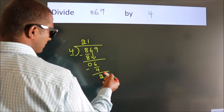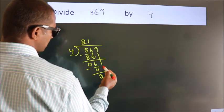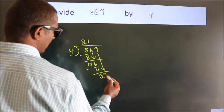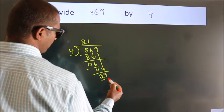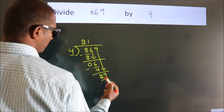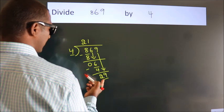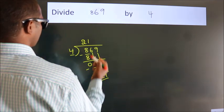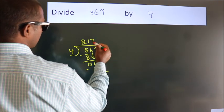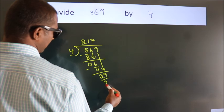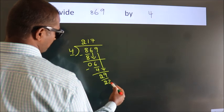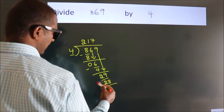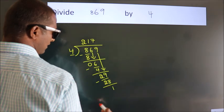After this, bring down the beside number — so 9 comes down, giving us 29. A number close to 29 in the 4 times table is 4 sevens, which is 28. Now we subtract, and we get 1.